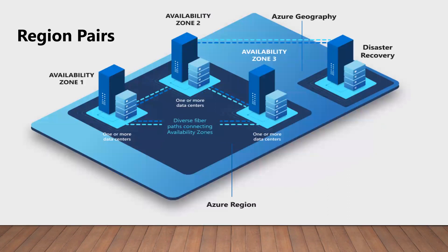What will happen if an entire region goes down? In that case, it won't matter even if you deployed your resource in an availability zone. To cater for such scenarios, we have region pairs within the same geographic region in Azure, which basically accounts for disaster recovery in case an entire region goes down.